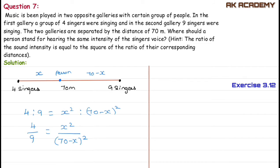Now, 4 by 9 can be written as (2 by 3) the whole square, because 2 twos are 4 and 3 threes are 9. So the equation becomes (2/3)² equals x divided by (70 minus x), the whole square.